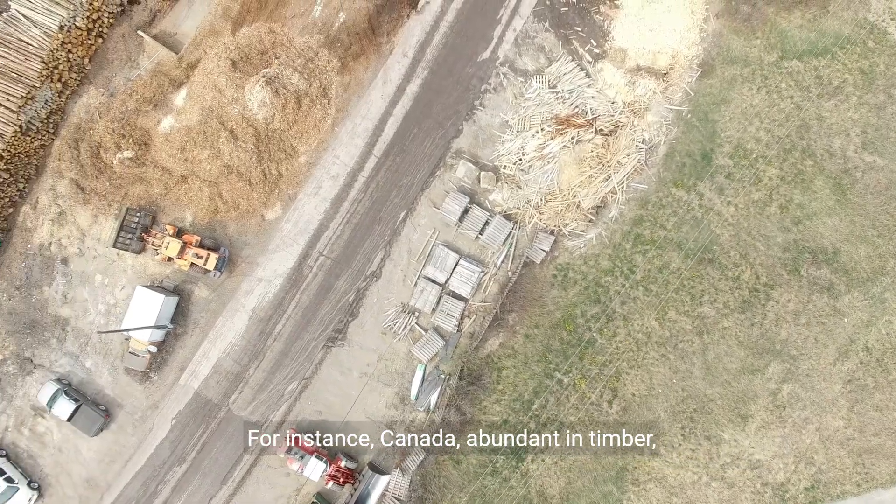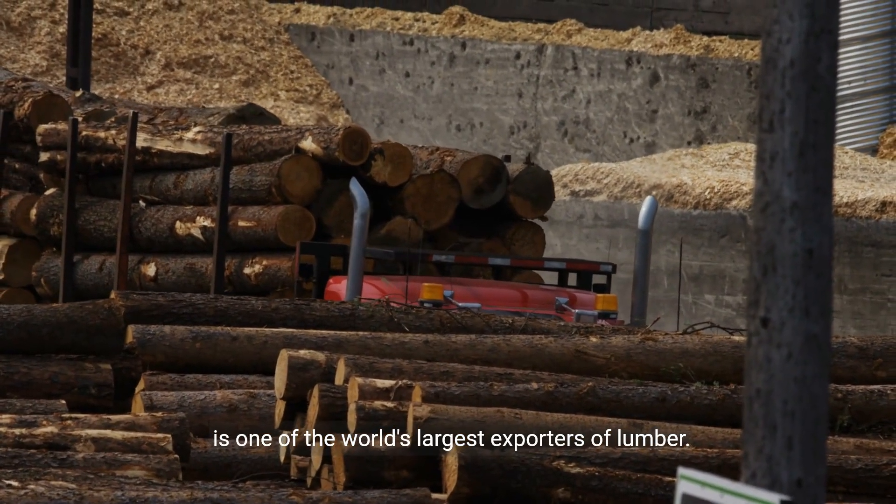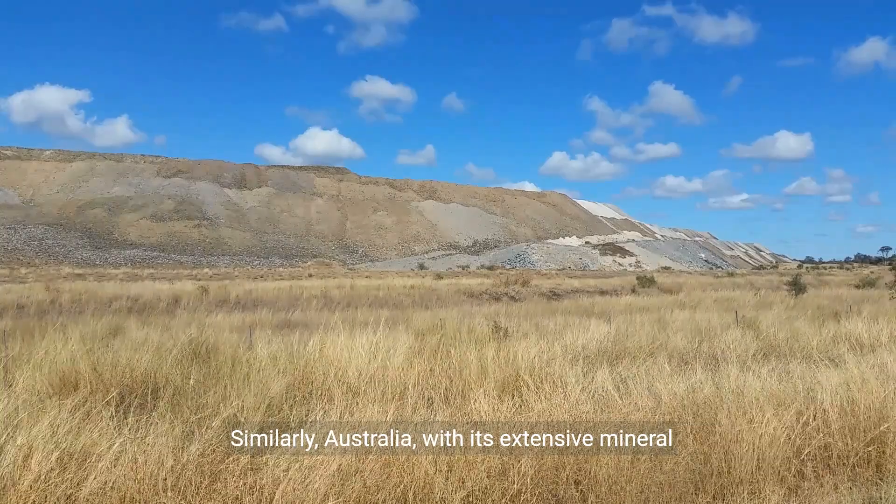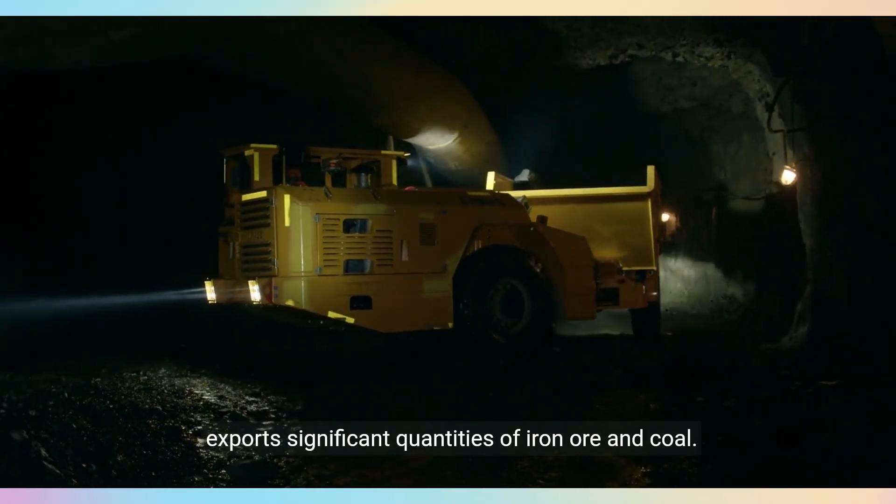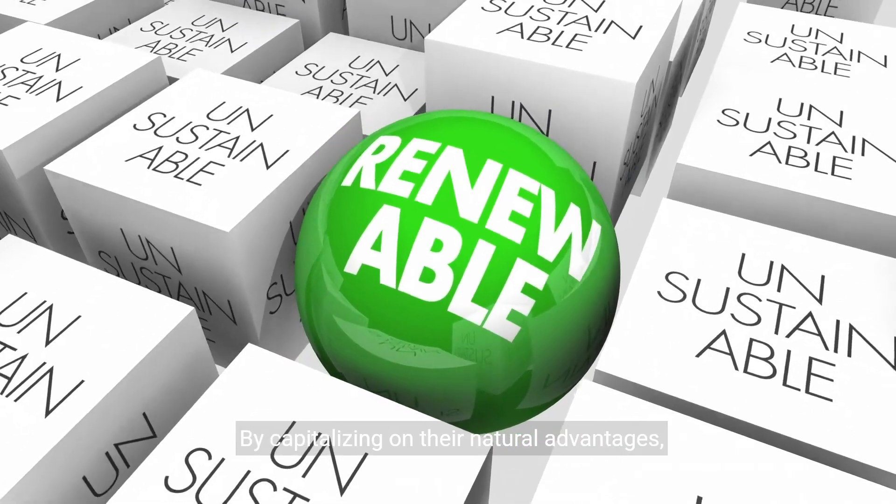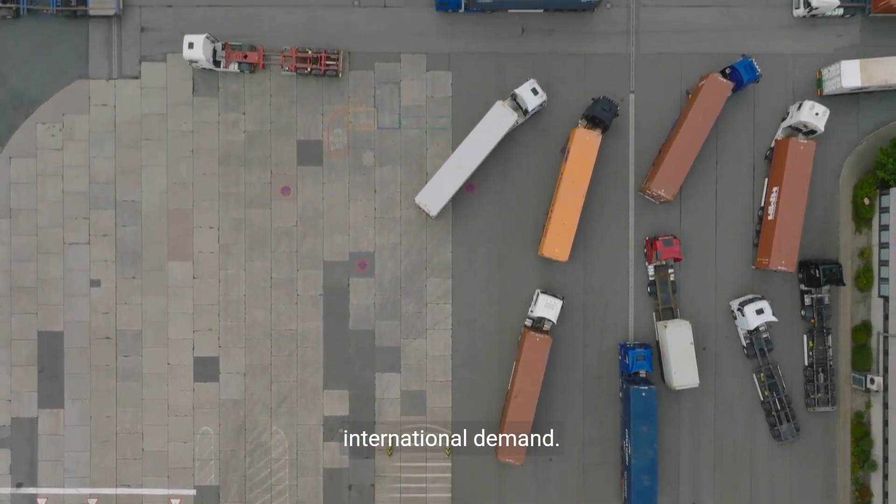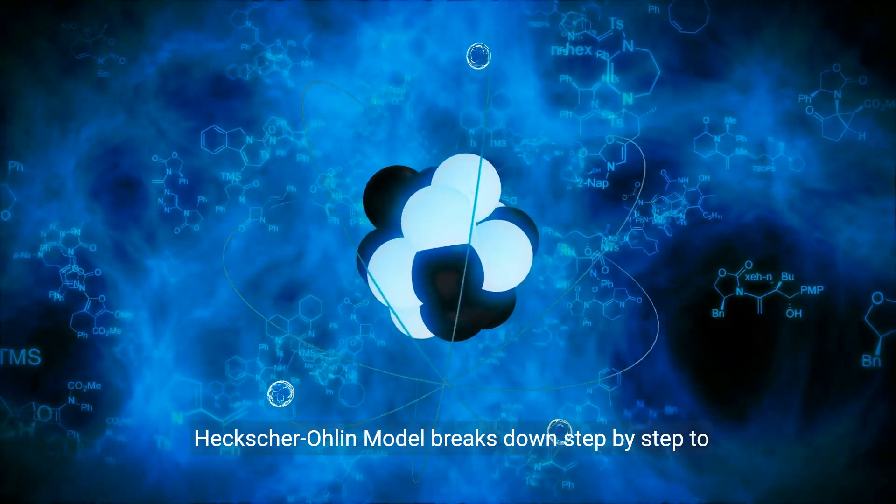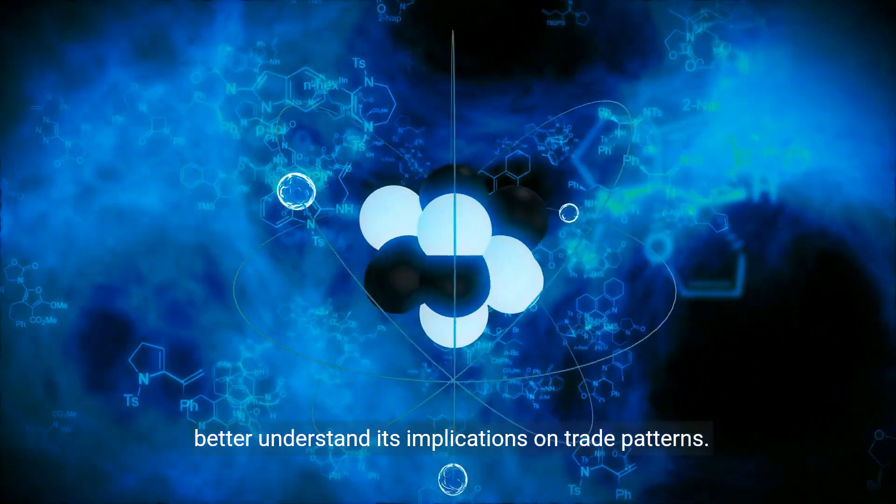For instance, Canada, abundant in timber, is one of the world's largest exporters of lumber. Similarly, Australia, with its extensive mineral deposits, exports significant quantities of iron ore and coal. By capitalizing on their natural advantages, these countries efficiently meet both domestic and international demand. As we move forward, you will see how the Heckscher-Ohlin model breaks down step by step to better understand its implications on trade patterns.